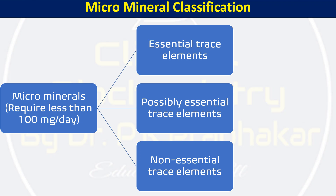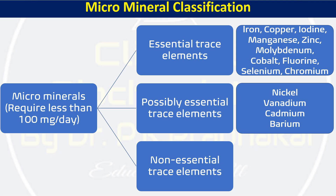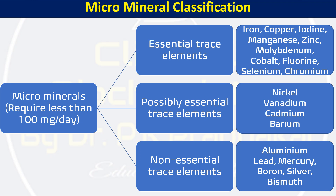Microminerals are classified into three categories: essential trace elements, possibly essential trace elements, and non-essential trace elements. Essential trace elements — without which we cannot survive — include iron, copper, iodine, zinc, molybdenum, cobalt, fluoride, selenium, and chromium. Possibly essential trace elements include nickel, vanadium, cadmium, and barium. Non-essential trace elements — whose absence causes no drawbacks — include aluminium, lead, mercury, boron, silver, and bismuth.